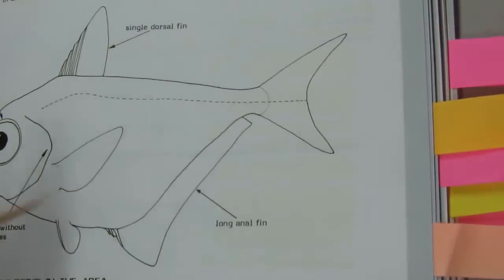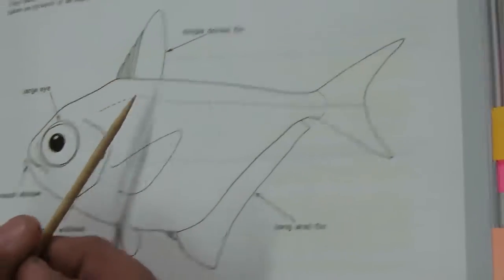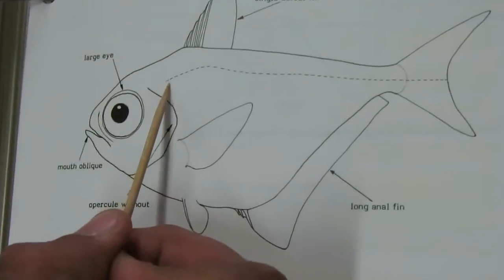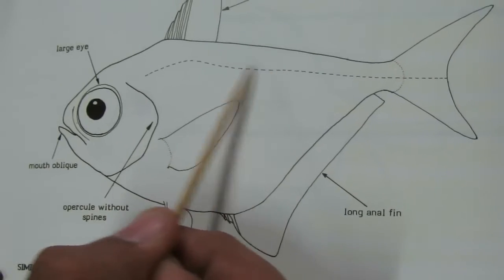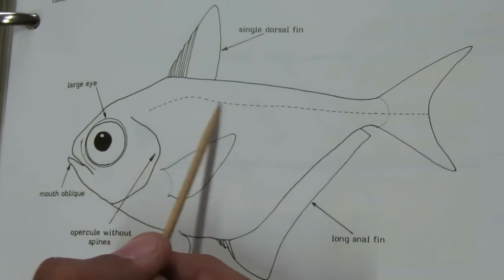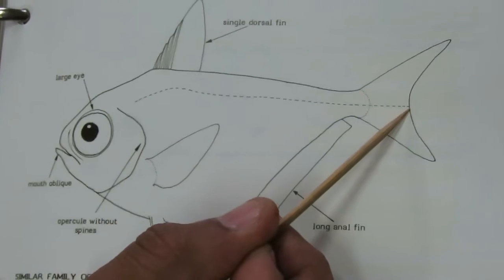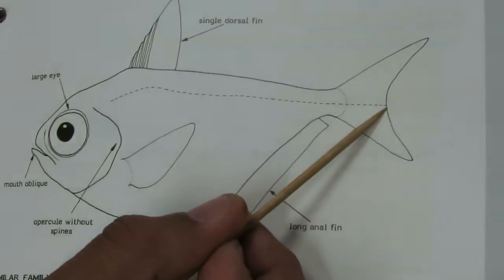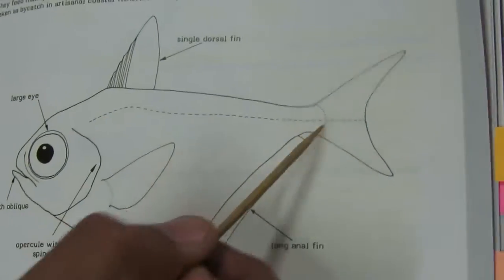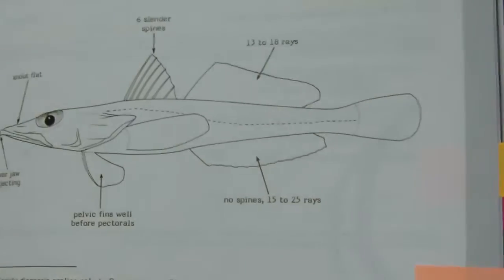Next is Pomfret family — Bramidae. The lateral line is well developed to the tip of the caudal fin, following roughly the dorsal profile of the body.